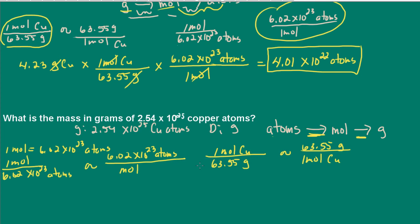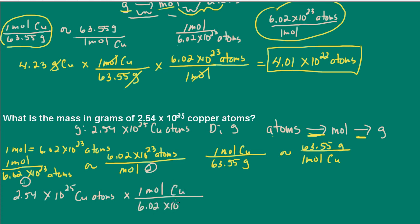Starting with 2.54 times 10 to the 25 copper atoms. I want to cancel out atoms, so I use conversion factor one: 1 mole of copper over 6.02 times 10 to the 23 atoms. Atoms cancel. That takes care of atoms to moles. Now going from moles to grams — I want to cancel out moles, so I use conversion factor two: 63.55 grams over one mole of copper. Moles cancel and I'm left with grams.